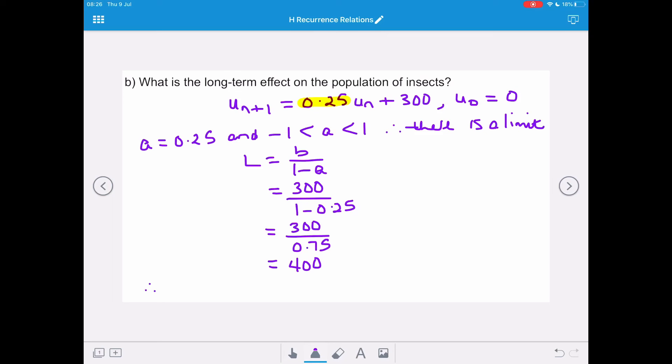So the long-term effect on the population of insects is the population of insects will never exceed 400 insects, because that's the limit of this recurrence relation.